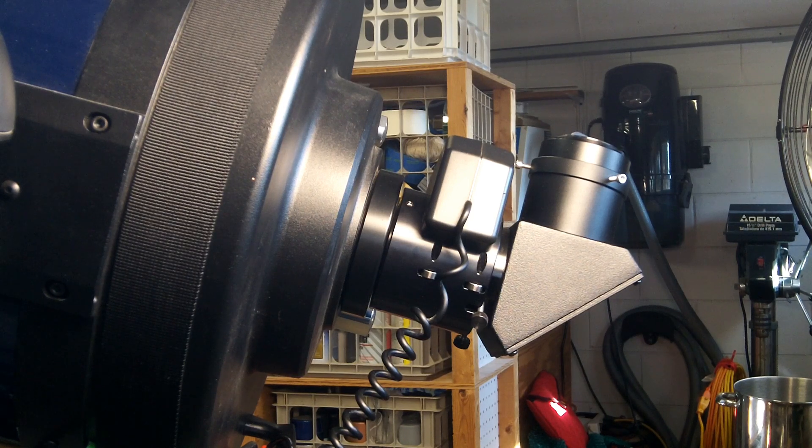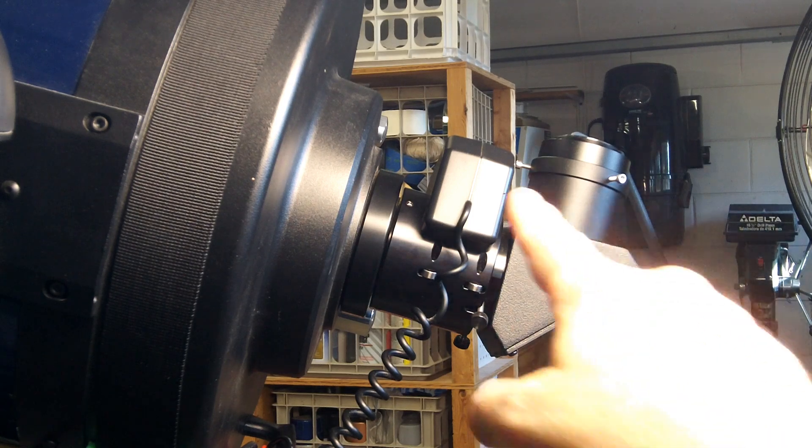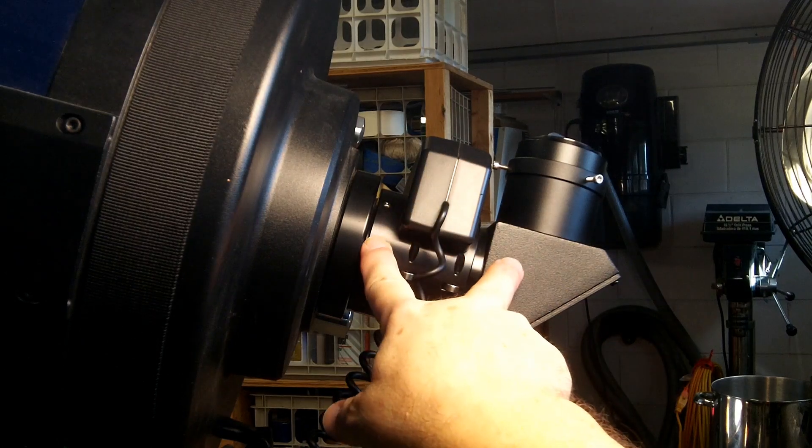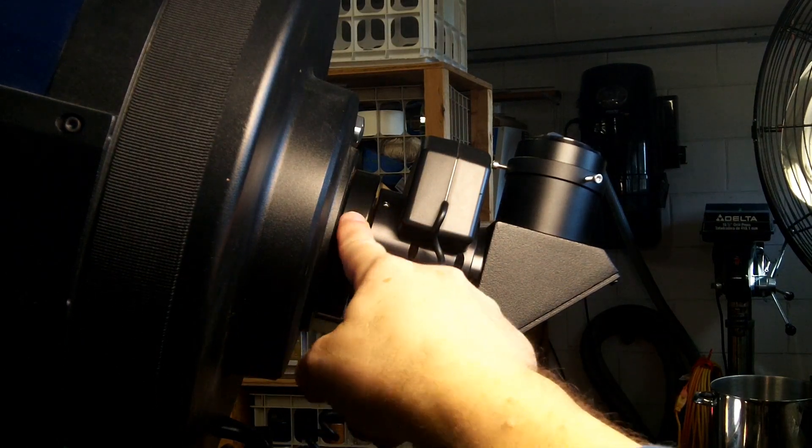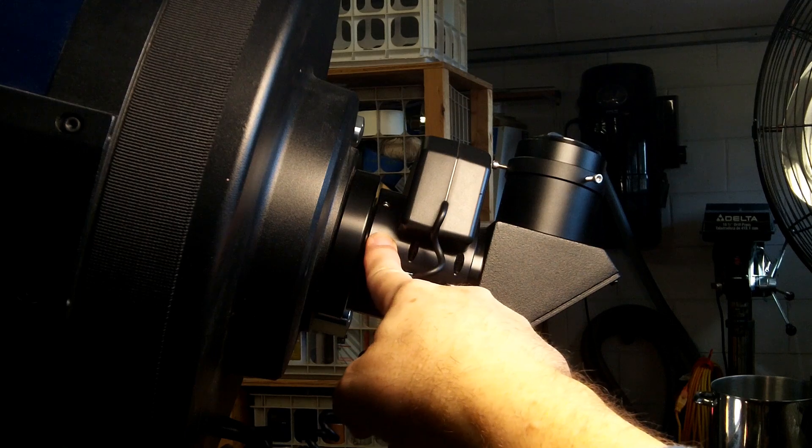I am using it with a Meade LX200. This is a 12 inch model. So I have the micro focuser here and I'll have to unscrew that to put this between the back of the telescope and the micro focuser.